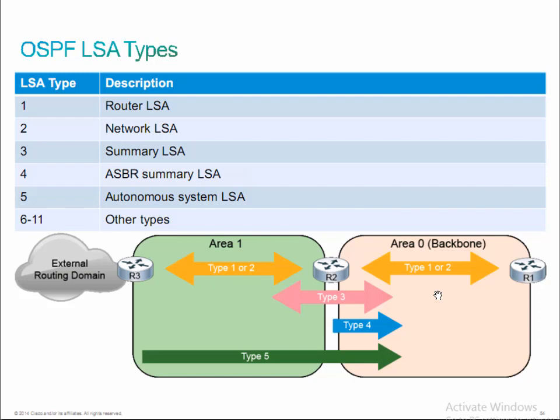Then we have type 3 LSAs — one of the more critical LSA types in OSPF. They're called summary LSAs. They're generated by ABRs and are supposed to represent an actual summary of type 1s that move from area to area. So essentially in OSPF, type 1 LSAs become type 3 LSAs. As all of my type 1 LSAs get constructed and advertised throughout area 1, as those LSAs pass through the ABR and move into area 0, they get converted from type 1 to type 3.